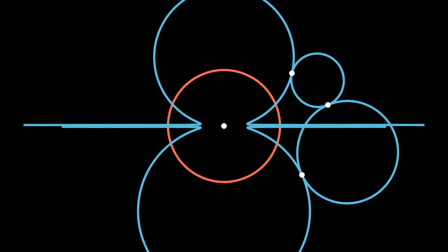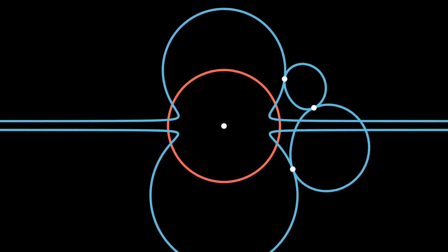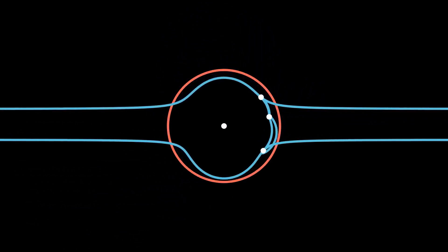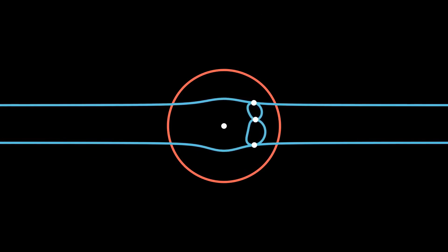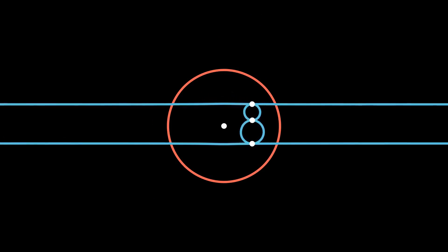Now we are ready to tackle the original problem. We can set our inversion circle with its center at one of the touch points. Then those two circles that meet at that touch point get mapped to lines — in fact, they get mapped to parallel lines, since they only intersected each other in one point, and that point becomes the point at infinity. The other two circles get mapped to circles, and all four of them still touch each other in the final picture.